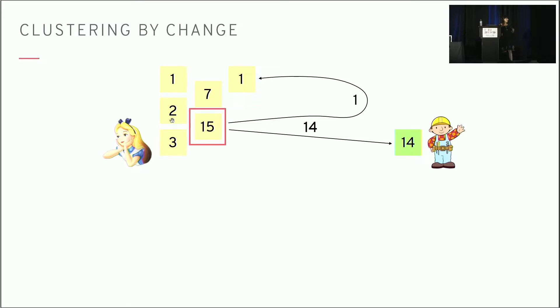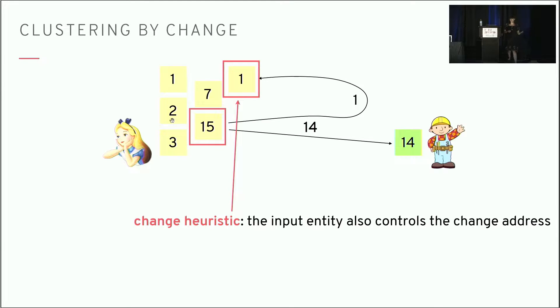The idea is that one of these outputs' money is actually changing hands and going to Bob, but the other one is just staying with the same user. The change heuristic basically says that as long as we can identify the change address in a transaction, we can assign that to the same entity as the input one. If these live in larger clusters, then we collapse those larger clusters down as well. We can see this is strictly more powerful—we can strictly build on top of the multi-input cluster using this change heuristic.